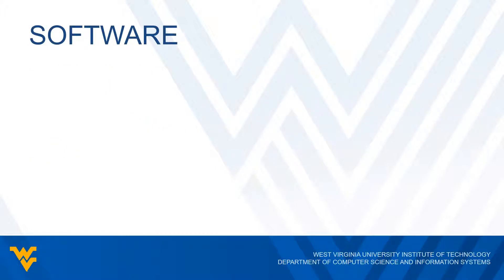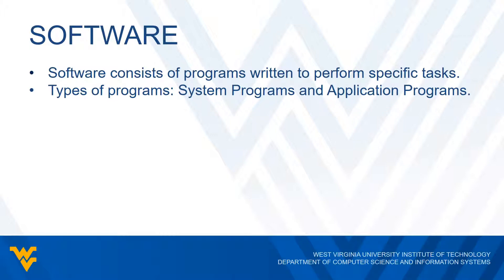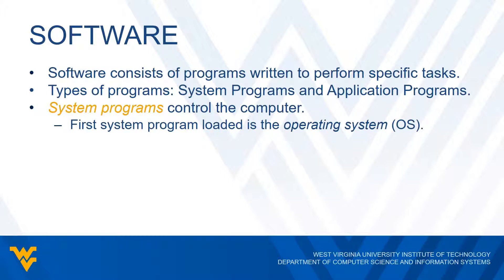That's enough with hardware. Let's talk about software. Software is basically programs that we write that tell the computer to perform different types of tasks. There are two particular types of programs: system programs and application programs. System programs basically control the computer — they tell the computer to do different things with hardware devices, because the hardware will just sit there and do nothing unless a program tells it to do something. The first program that's actually loaded into our system is the operating system.